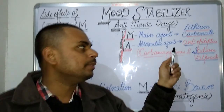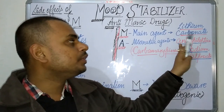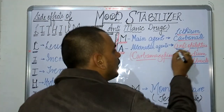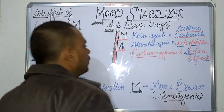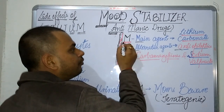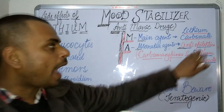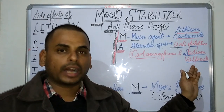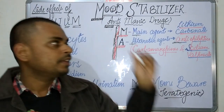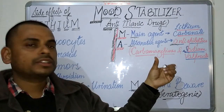The A of ANTI-MANIC refers to the alternative agents, which are the anti-epileptic drugs. Anti-epileptic drugs like carbamazepine and sodium valproate are the other agents used as anti-manic drugs. So M stands for main agent and A stands for alternative agents — the anti-epileptics.